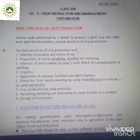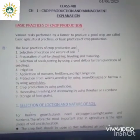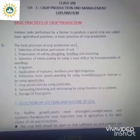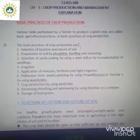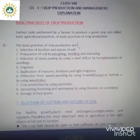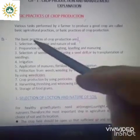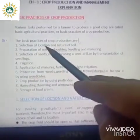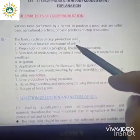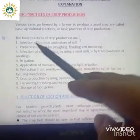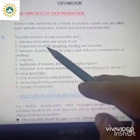There are various steps performed by a farmer to produce a good crop, and that is known as basic agricultural practices or basic practices of crop production. Let us see one by one what the basic practices are. First of all, selection of location and nature of the soil is very much important to grow any kind of crop.